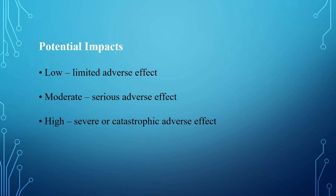Loss of availability is the disruption of access to and use of information and information systems. Potential impact is the magnitude of harm or damage that an organization will suffer as a result of a security breach. They are the level of impact to each of the security objectives — confidentiality, integrity, and availability. Potential impacts are divided into three levels: low, moderate, and high.